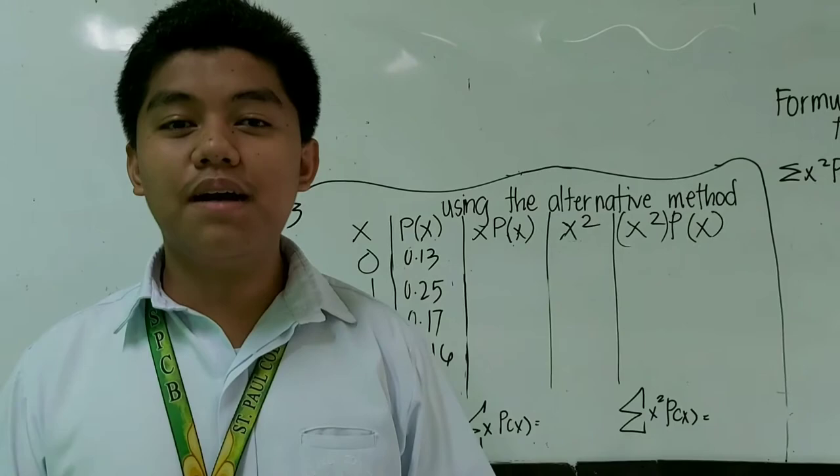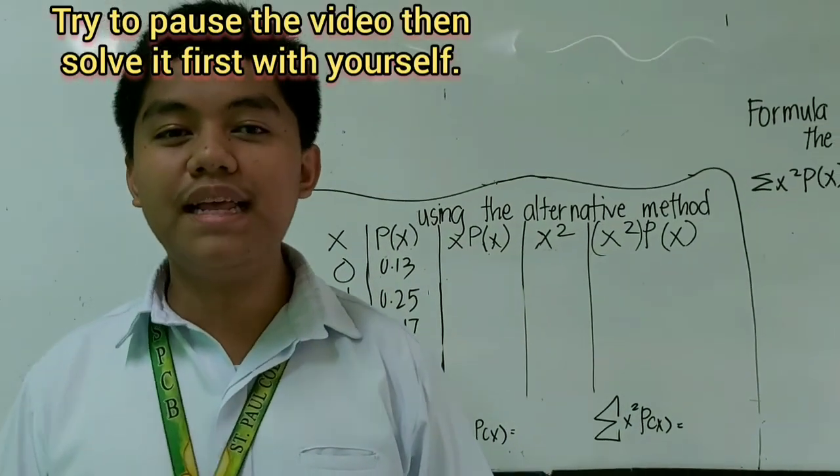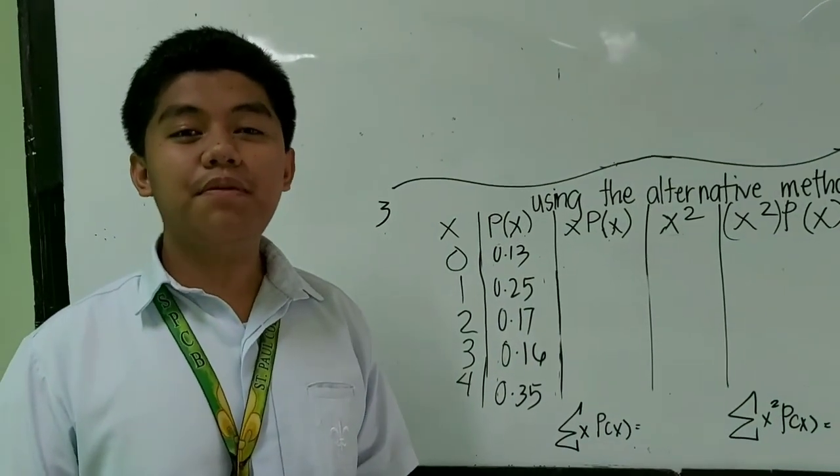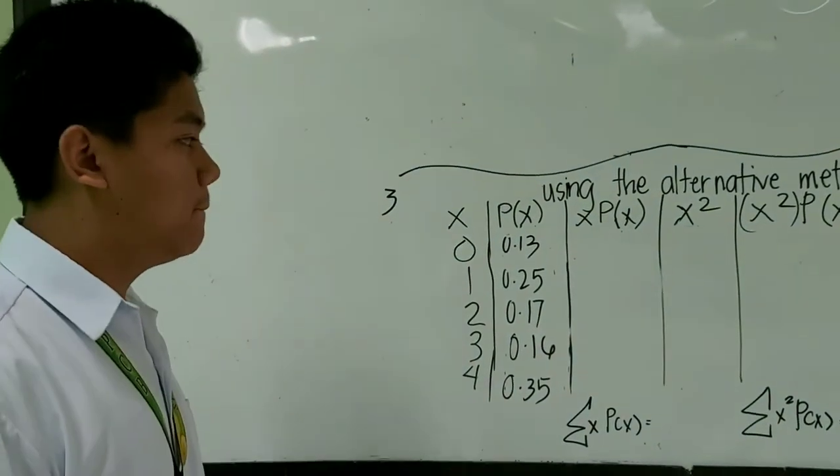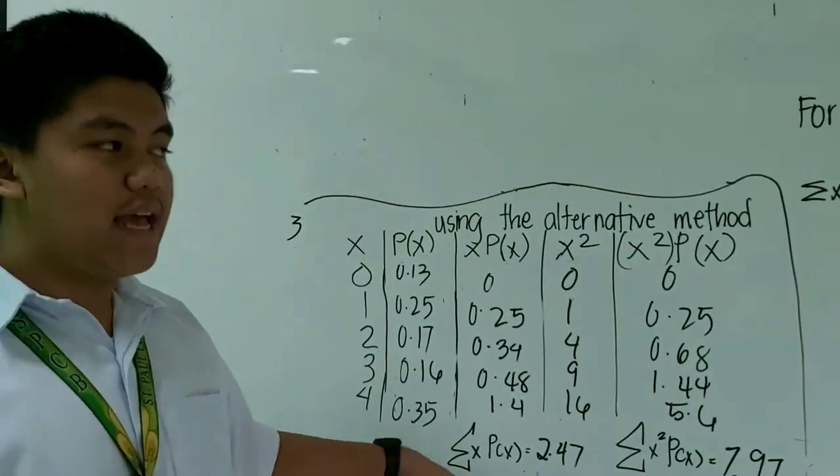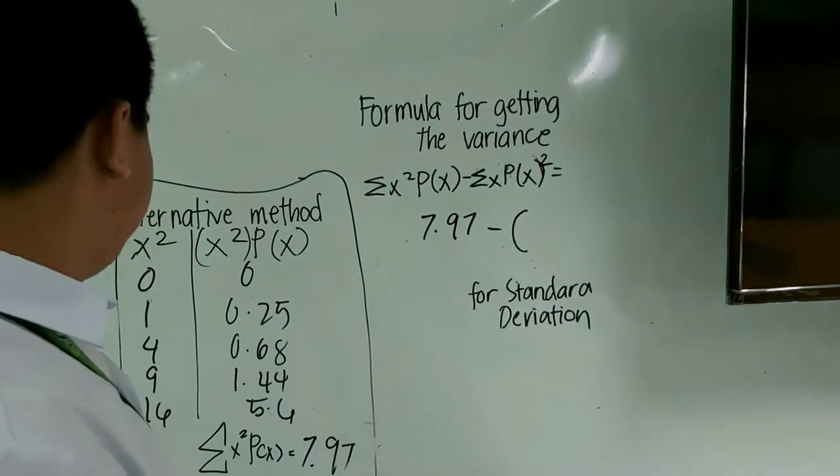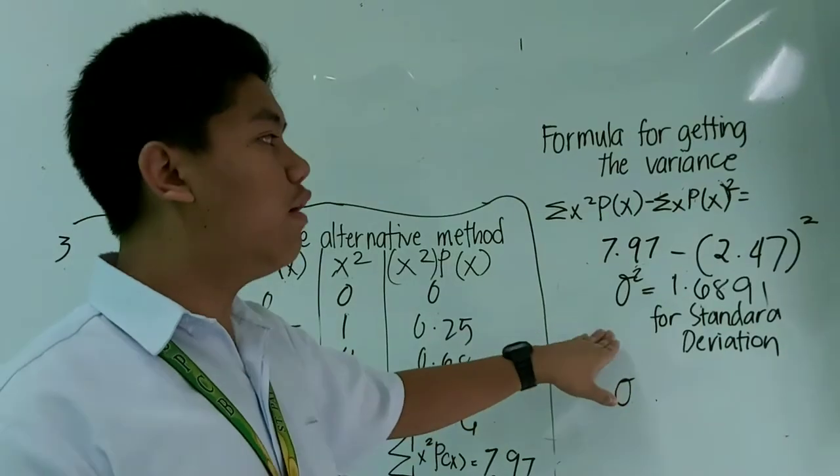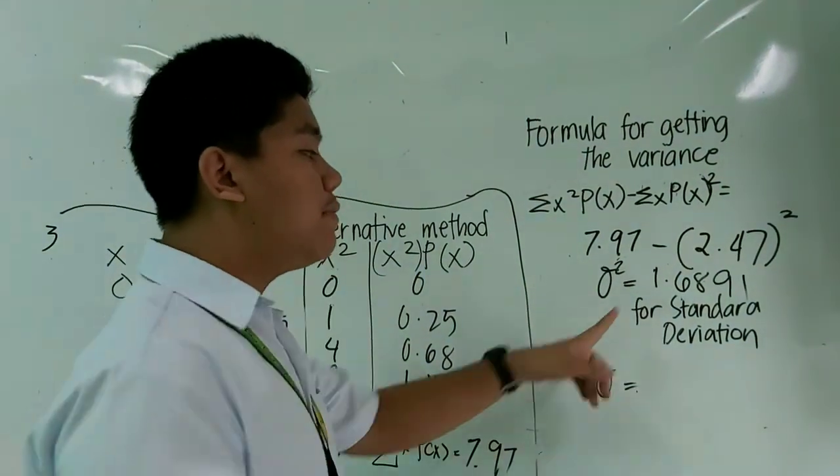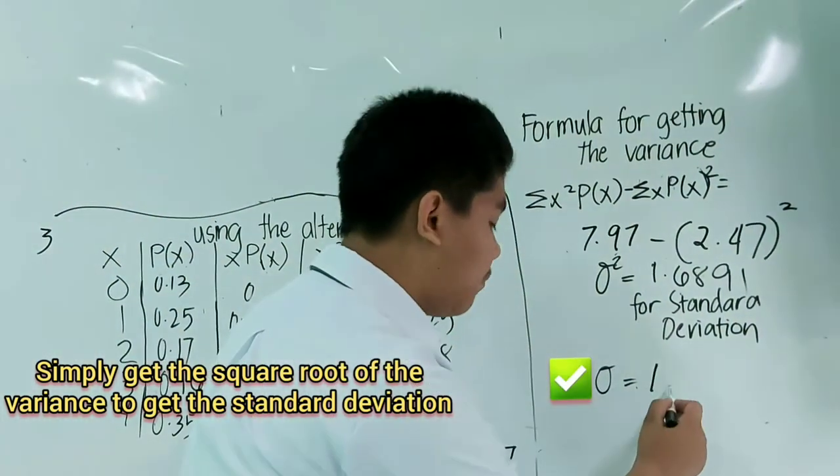And if you got the first and second examples correctly, then I'm sure the third example you're going to get perfectly too. And if you want to test yourself, please pause the video for a while. We have the summation of X squared P of X, which is 7.97 minus, don't forget to square the summation of X P of X. And proceeding to the standard deviation, simply square root 1.6891 into 1.370.